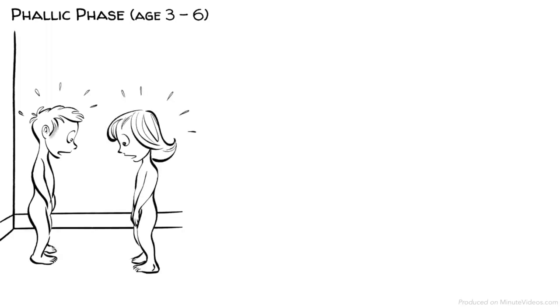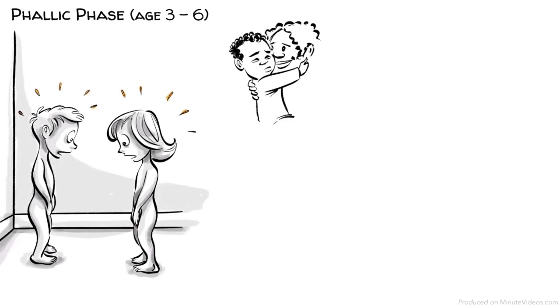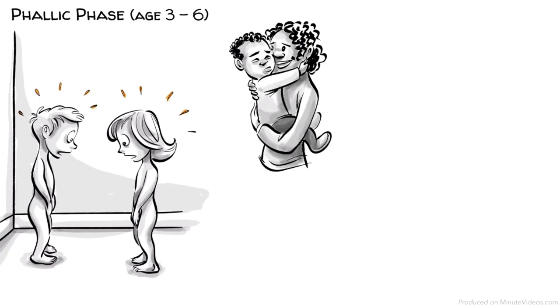The phallic phase, age three to six. Our libido now turns to the genitals as we discover the differences between the female and the male gender. The boys' conflict in this phase occurs as a rivalry with their father, also called the Oedipus complex.